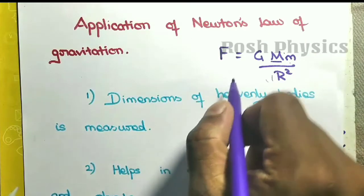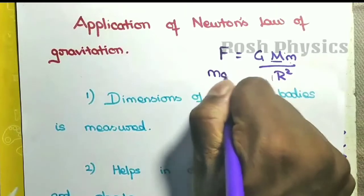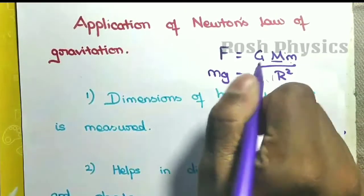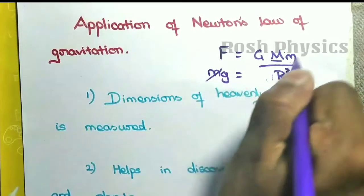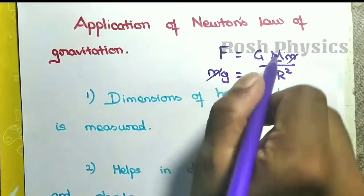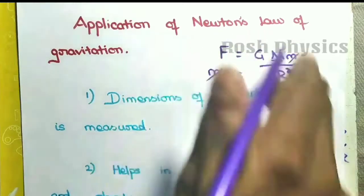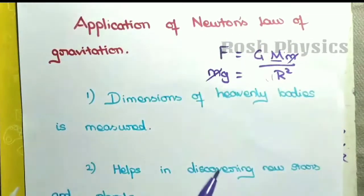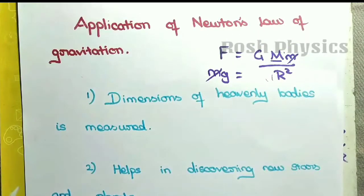We can also find acceleration due to gravity. Using F equals mg, and cancelling the mass m, we get g equals GM divided by R squared. So Newton's law of gravitation allows us to find the acceleration due to gravity.